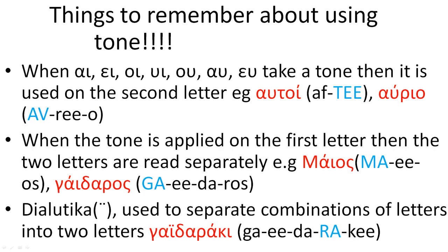You may have watched my video about pronunciation rules, which covers how certain combinations of letters are pronounced in the Greek language. The important thing to remember is that when these combinations take a tone, it is used on the second letter. For example, in the word afti, which means they, omicron iota has a tone and it is used on iota, which is the second letter. Similarly, in the word avrio, which means tomorrow, alpha upsilon also has a tone, and it is applied on the letter upsilon, which is again the second letter.